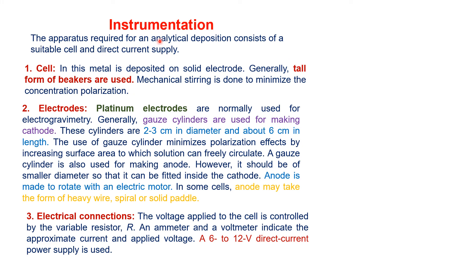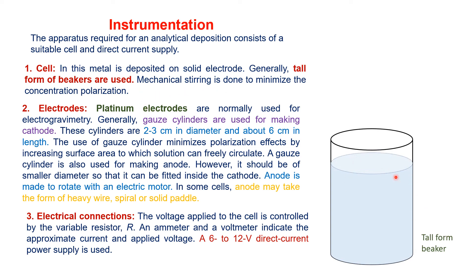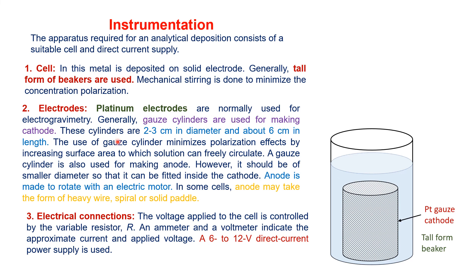For instrumentation, the apparatus required for analytical deposition consists of a suitable cell and a direct current supply. Tall-form beakers are used as cells, and mechanical stirring is done to minimize concentration polarization. The electrodes are generally made from platinum; gauze cylinders are used for making the cathode — typically 2 to 3 centimeters in diameter and 6 centimeters in length. The use of a gauze cylinder minimizes the polarization effect by increasing the surface area through which the solution can freely circulate.